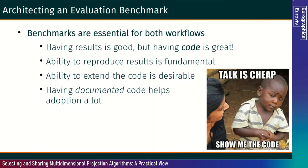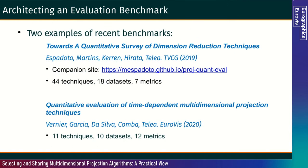In summary, benchmarks are essential for both workflows. Having results is good, but having code is great. The ability to reproduce results is fundamental, the ability to extend the code is desirable, and having documented code helps adoption a lot. Two examples of recent benchmarks: first, Towards a Quantitative Survey of Dimension Reduction Techniques by Espadoto, Martins, Kermin, Hirata, and Telea, published in TVCG in 2019. You can check the companion site for the paper via the provided link.